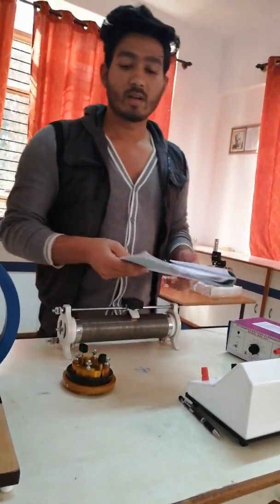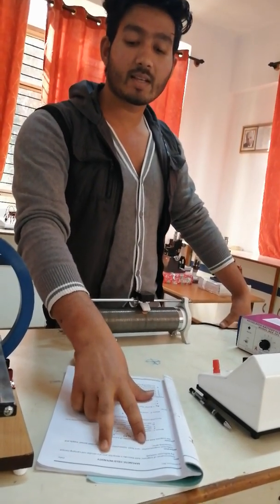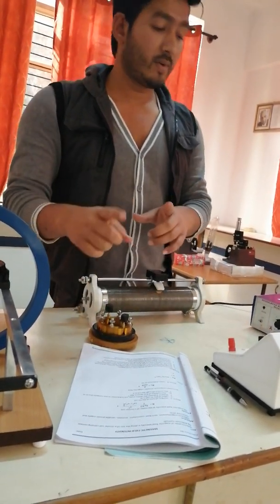The main aim of this experiment is to determine the magnetic field along the axis of the coil carrying current using a tangent galvanometer.